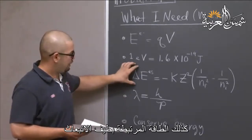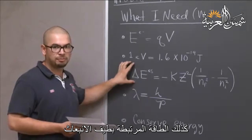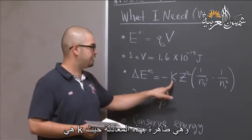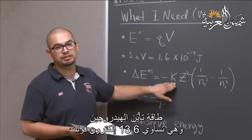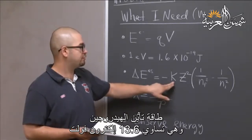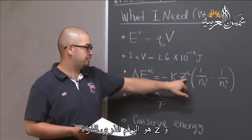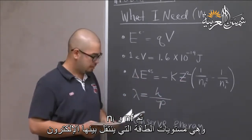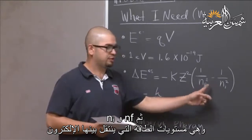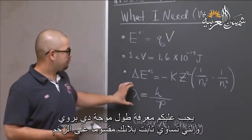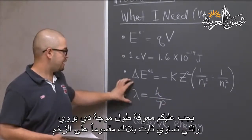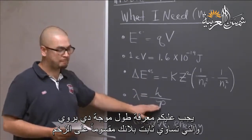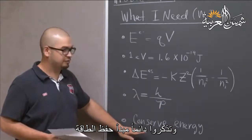Also, the energy associated with an emission spectrum is given by this equation, where K is the ionization energy of hydrogen, which is 13.6 electron volts. The Z squared is the atomic number of your atom of interest, and NF and N sub i are your transition states. Additionally, the de Broglie wavelength is given by lambda equals Planck's constant divided by the momentum.